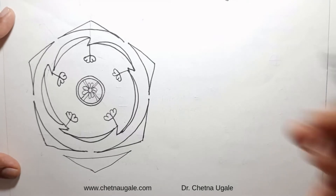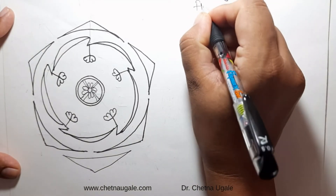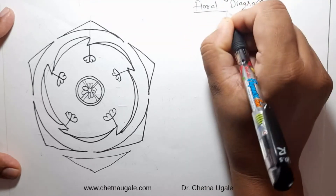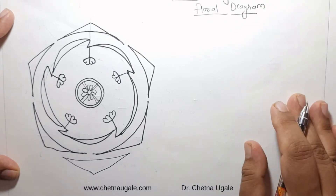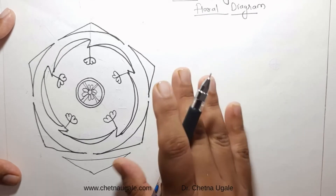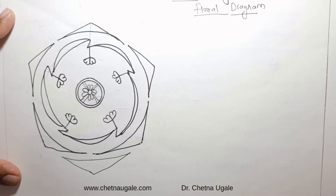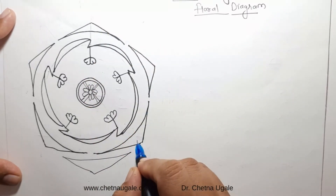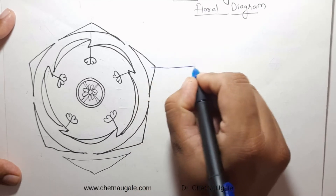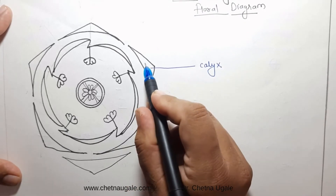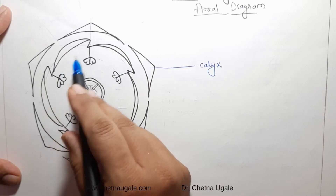Good morning students. Today we are going to learn floral diagrams. Floral diagrams are a representation of the floral formula. The floral diagram is composed of several bowls — the outermost bowl of the flower is the calyx, which is represented by the outermost ring.